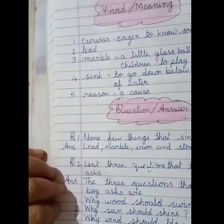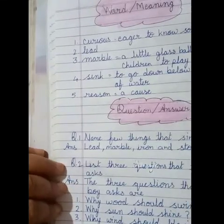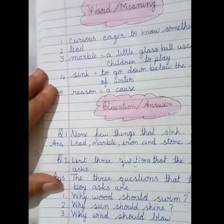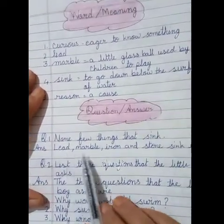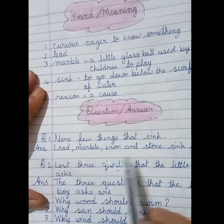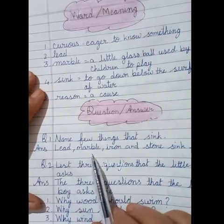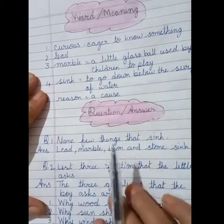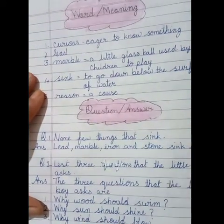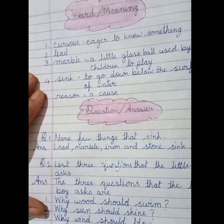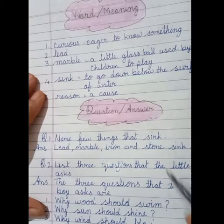Question and answer. Your first question is: name a few things that sink. The answer is lead, marble, iron, and stone. But you can also write other names like copper and brass.